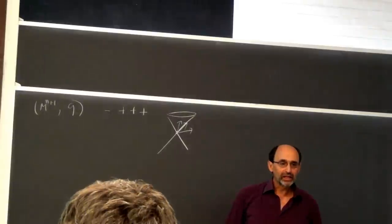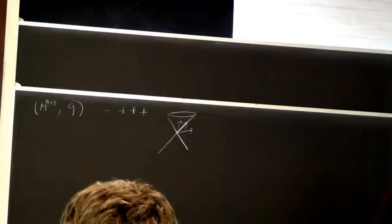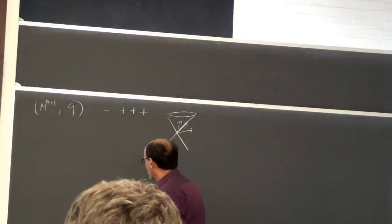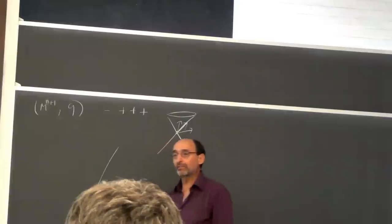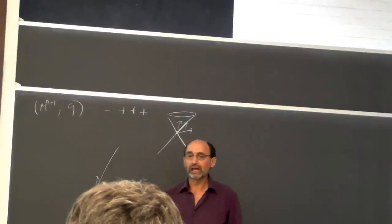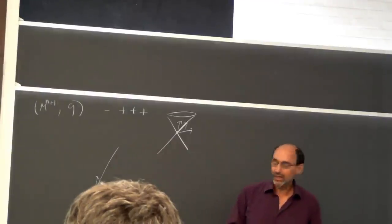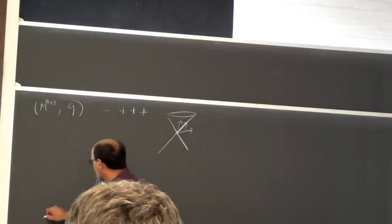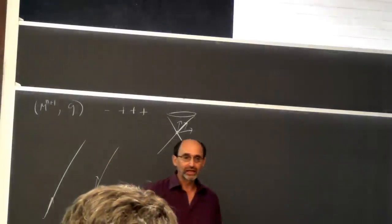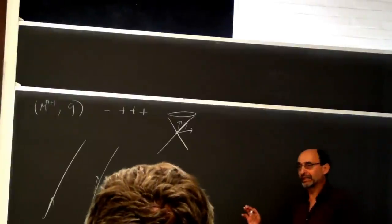This distinction between time-like, null, and space-like is extremely important. You can then talk about curves: a curve which is time-like — meaning the tangent to the curve is time-like at every point — or space-like curves, which are not very interesting. Null curves are very interesting, and null geodesics are fundamental. This is partly because light signals in general relativity propagate along null geodesics.